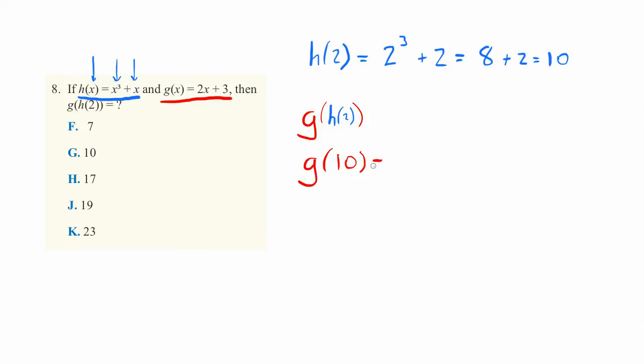And we can do the same thing to figure out g(10). So here, instead of an x, we substituted a 10. We're going to want to do the same thing on the other side of the equation, which leaves us with 2 times 10 + 3 = 23, which is the correct answer.